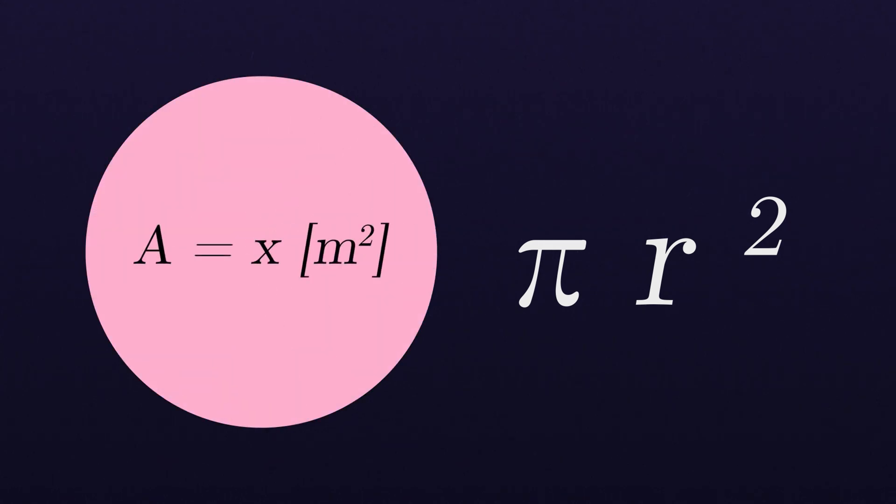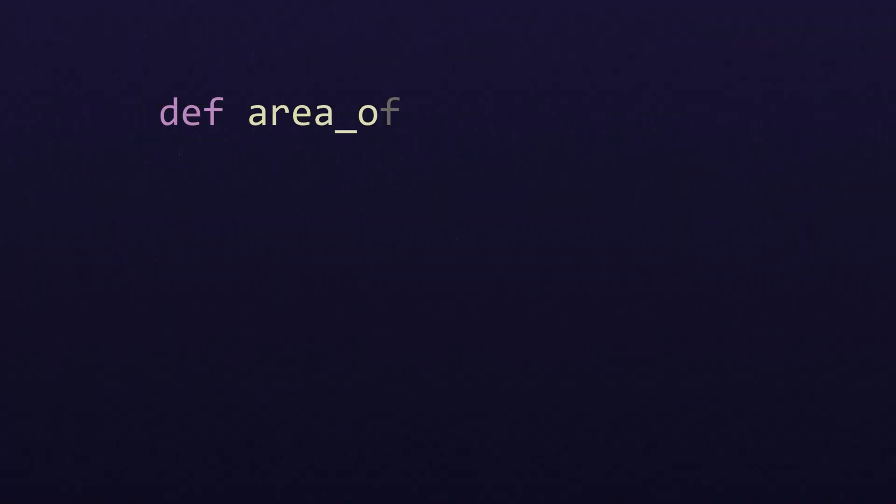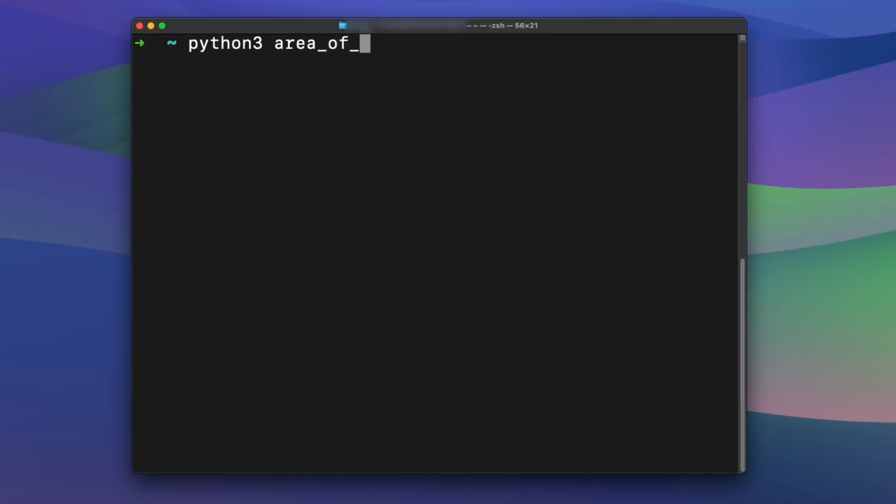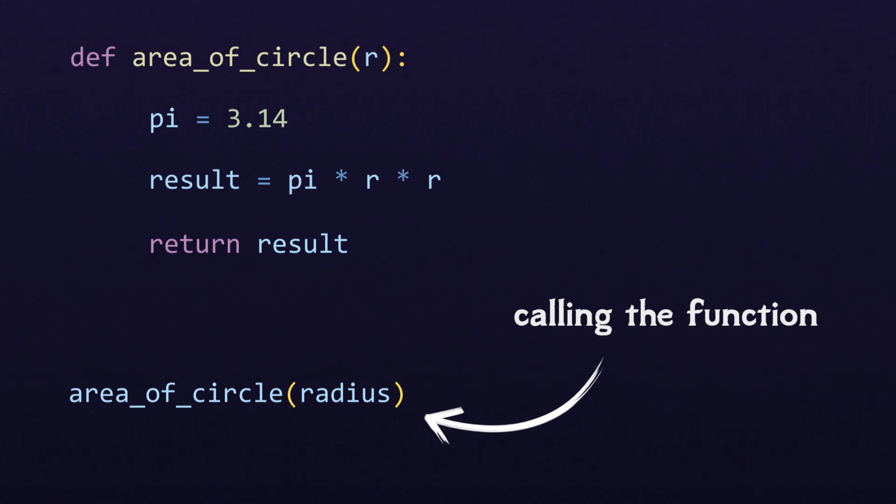Here's the code that defines the area of circle function. If all we do is define the function, it won't actually do anything. We have to call the function in order for it to execute.